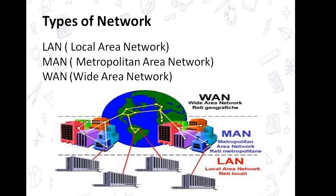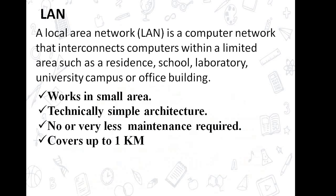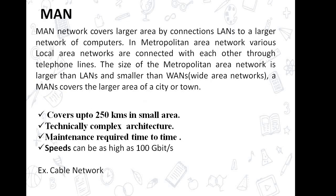Now let's look at the types of computer networks. There are three types: LAN, MAN, and WAN. As you can see in the picture, LAN covers a small area, MAN covers a comparatively bigger area, and WAN is a wide area network covering the entire world. LAN is a small network limited to residences, school campuses, and office buildings. It works in a small area, has technically simple architecture, requires no maintenance, and covers up to five kilometers maximum.